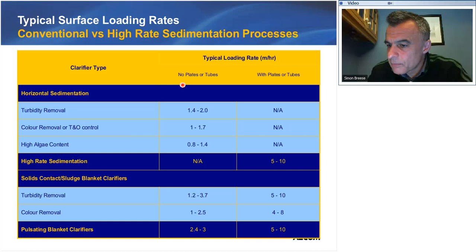For horizontal sedimentation basin loading rates: if you're doing turbidity removal only, a typical loading rate would be 1.5 to 2 metres per hour. If you're looking at color, taste, and odor removal, you'll have to drop that a little, because color floc is far lighter and fluffier than floc containing primarily particulate matter. And if you have algae, you'll have to drop the loading rate even further for a conventional sedimentation basin. Basically around 1.5 metres per hour is a rough figure for conventional sedimentation — and that low loading rate results in very large basins that are expensive to build and provide marginal performance.